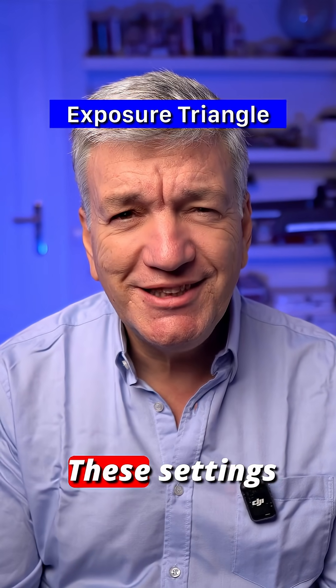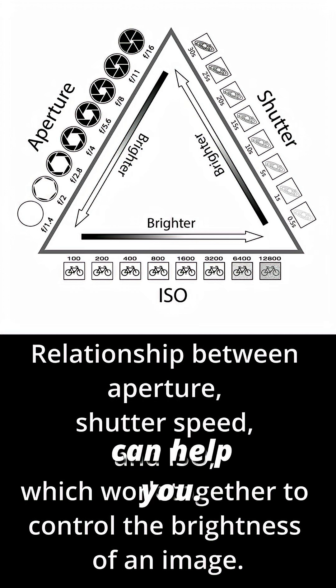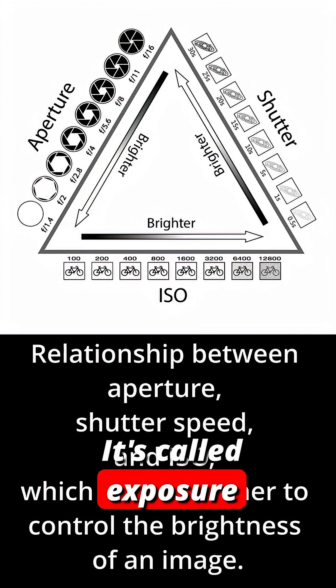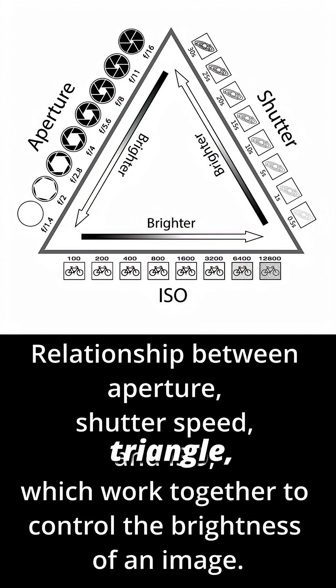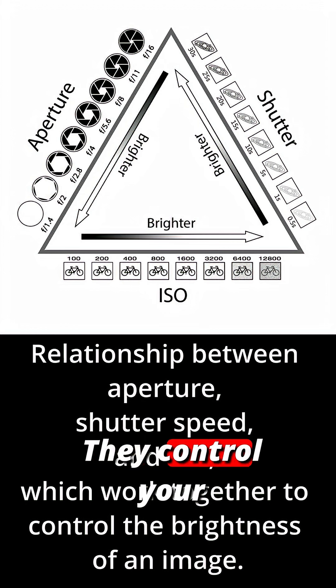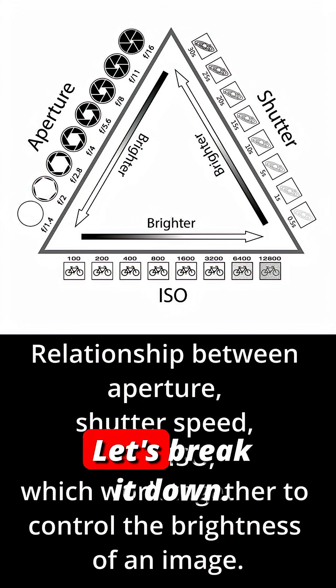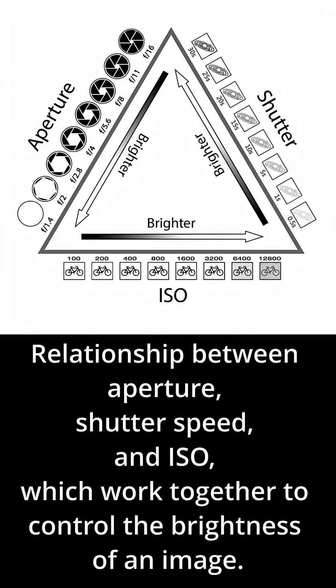But iPhone photos, these settings can help you. It's called the Exposure Triangle: Shutter Speed, ISO, Aperture. They control your photo's brightness. Let's break it down.